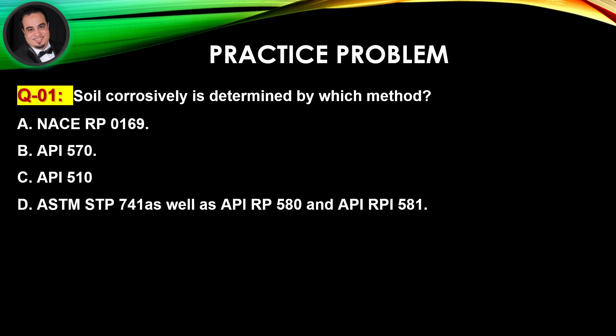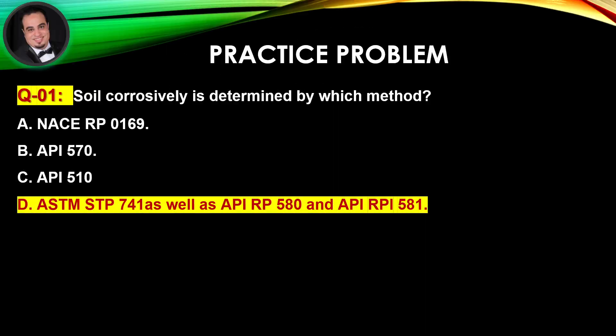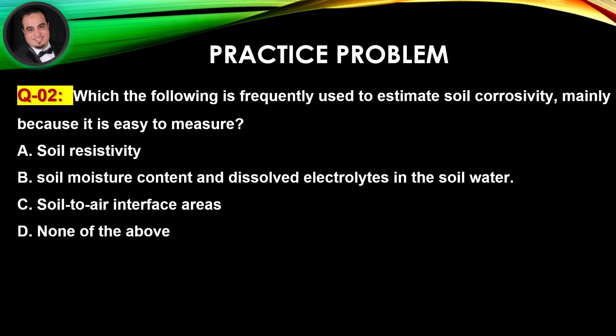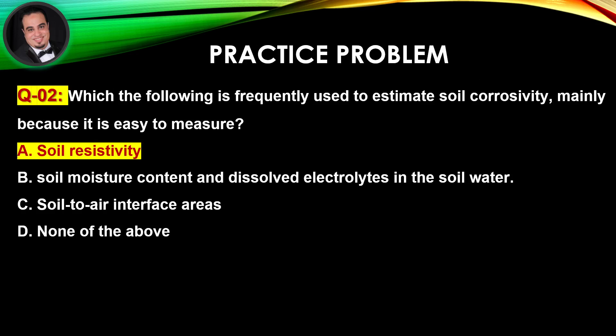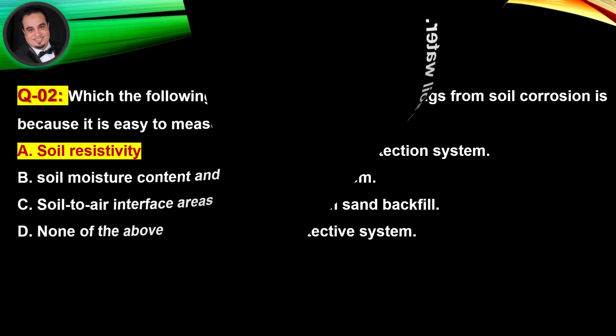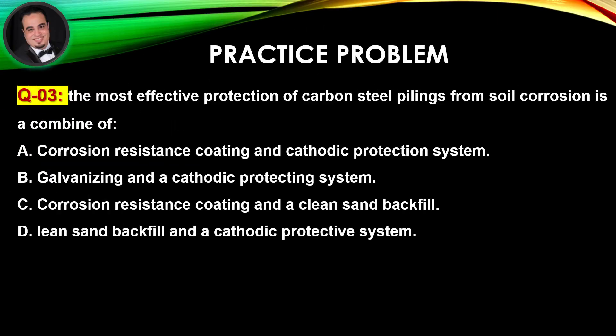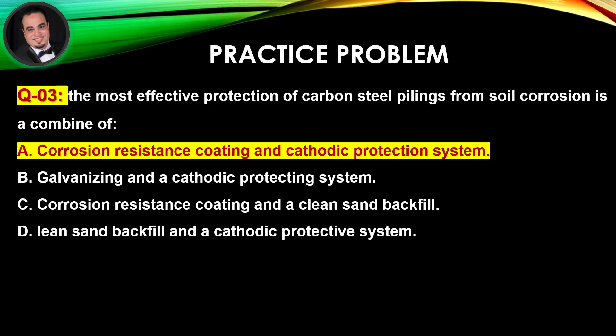Practice time. Question number one: Soil corrosivity is determined by which method? Answer is D. Question number two: Which of the following is frequently used to estimate soil corrosivity, mainly because it is easy to measure? Answer is A. Question number three: The most effective protection of carbon steel pilings from soil corrosion is a combination of? Answer is A.